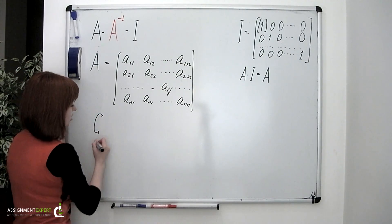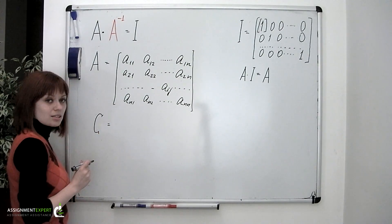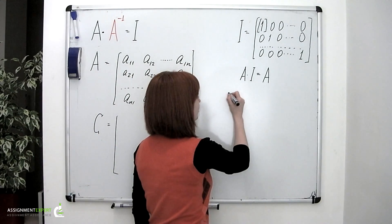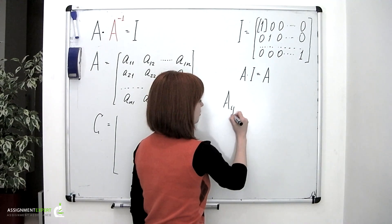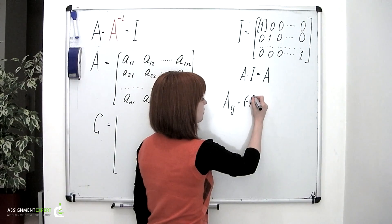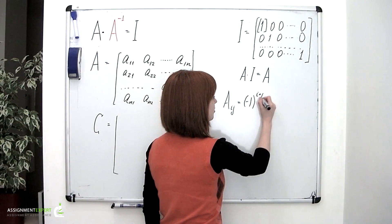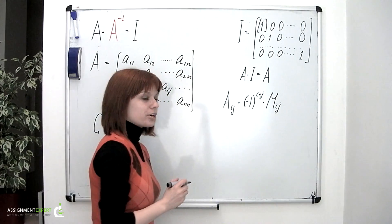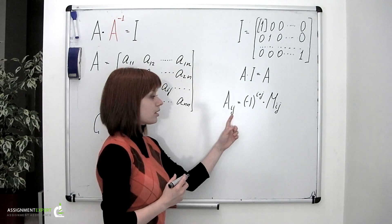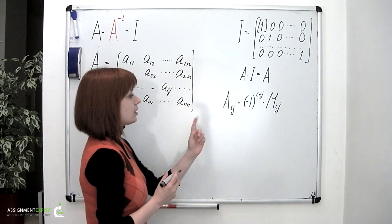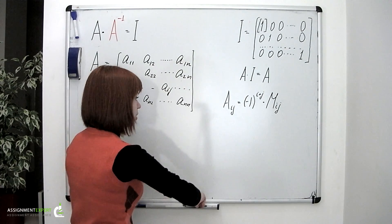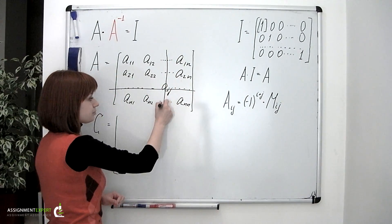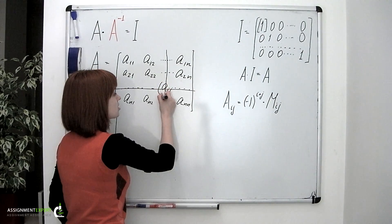Then there is a so-called adjugate matrix, also denoted as C, and it is composed of the so-called algebraic cofactors, which are found by the following formula: A_ij equals negative 1 taken to the power of i plus j multiplied by the minor M_ij, where i is the number of the row, j is the number of the column, and minor M_ij is the determinant of the matrix which is obtained from the initial one by removing the i-th row and the j-th column. So it is a minor to this a_ij element.